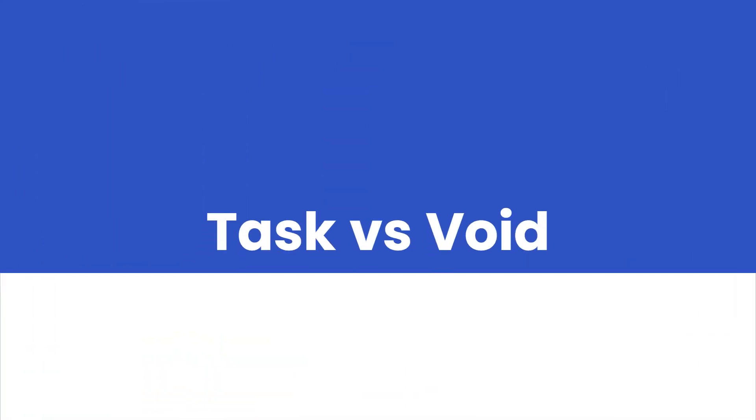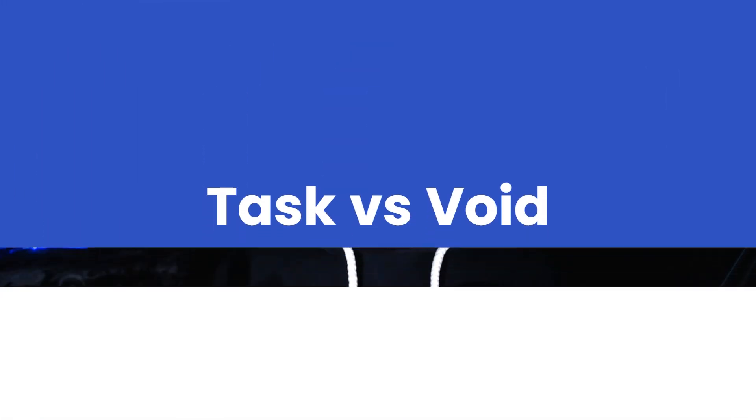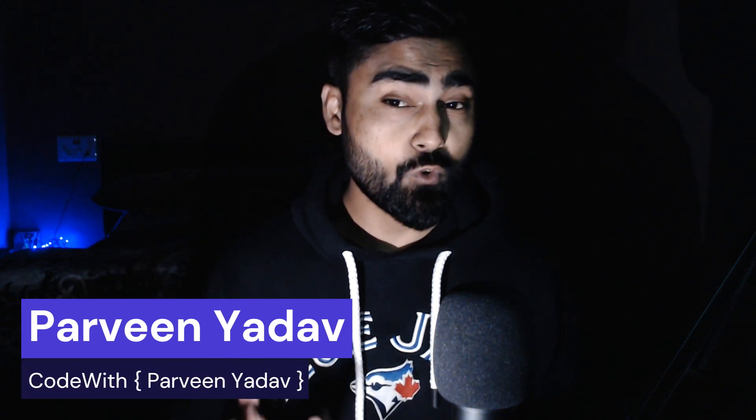The big confusion is task versus void. Why are there two things when both void and task won't return anything? Then in what situation should I go for void, and in what situation should I go for task? Now let's jump into the code and talk about all the disadvantages, advantages, and the use cases - where to use what - the guidelines.